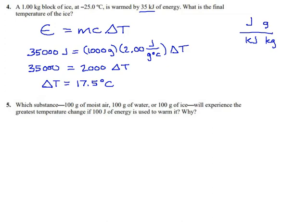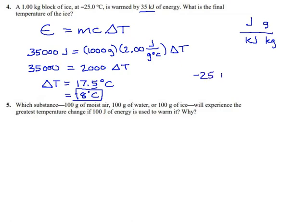Now let's give significant digits their due. This mass had 3 sig figs, this energy had only 2 sig figs, and the specific heat we looked up had 3 sig figs. So our answer can only have 2 significant digits — we're held back by the 2 that the energy had. We have to round 17.5 to 18 degrees, rounding up because this digit is 5 or more. So delta T is 18 degrees, meaning the ice warms up by 18 degrees. It used to be at minus 25, and now it's gained 18 degrees, so now it's at minus 7. Our very cold block of ice is now a pretty cold block of ice.